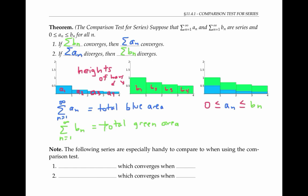These facts are known as the comparison test for series and are very useful in establishing convergence. But we have to be careful not to take the conclusions too far. In particular, if the smaller series of a sub n's converges, then we really can't say anything about the larger series of b sub n's — it could converge or it could diverge.